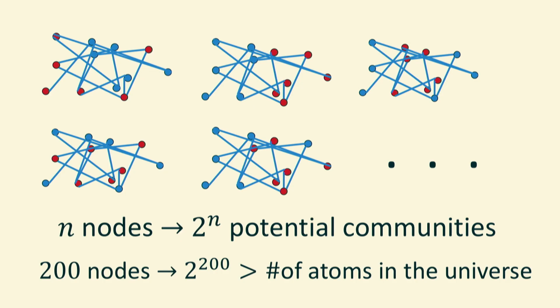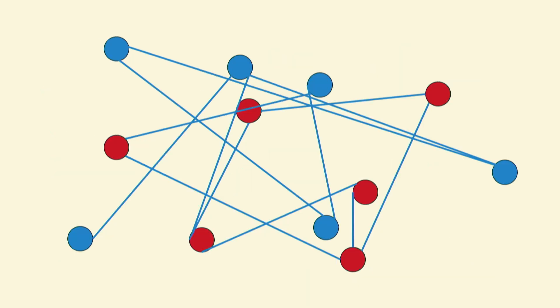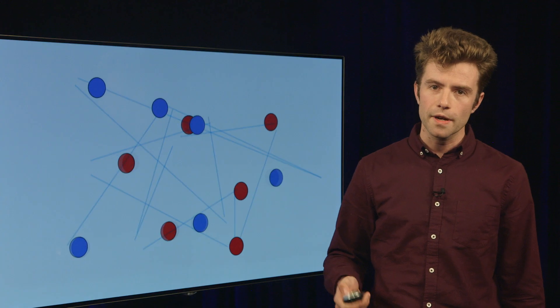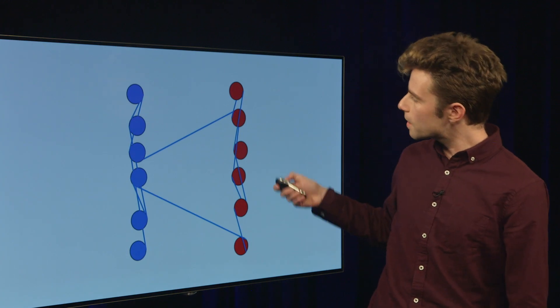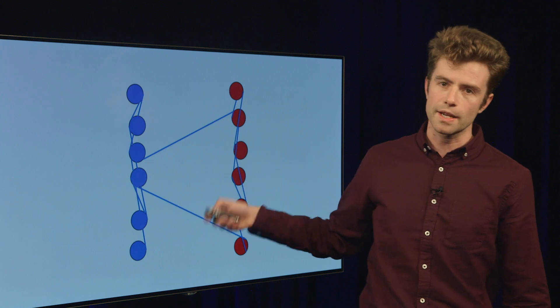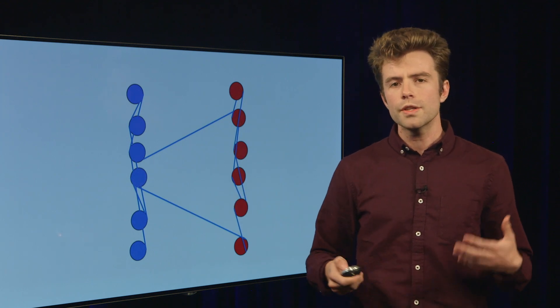It turns out, though, that for this problem, there are algorithms, including some studied in my work, which are much cleverer. And they can recover communities like this given a data set, which if I rearrange, you can see, is much better connected within itself than to the rest of the network.